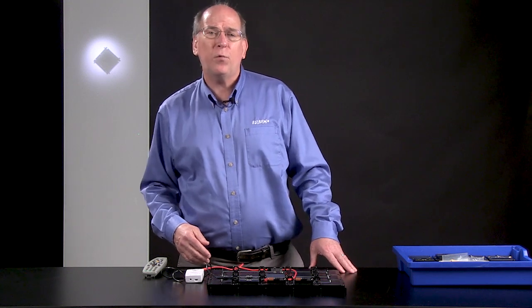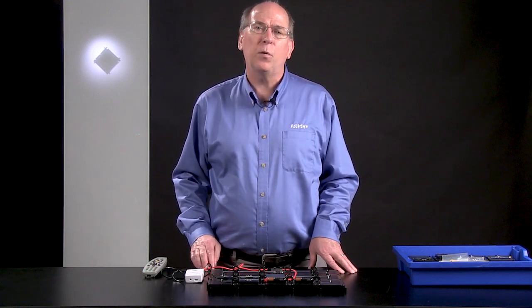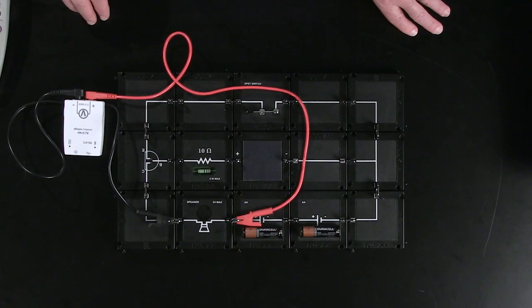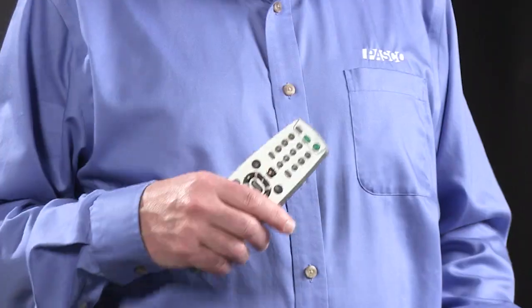With the Advanced Expansion Kit, students can use their PASCO Modular Circuit Kit to build a circuit that detects, amplifies, and makes audible the signal from an infrared remote control.